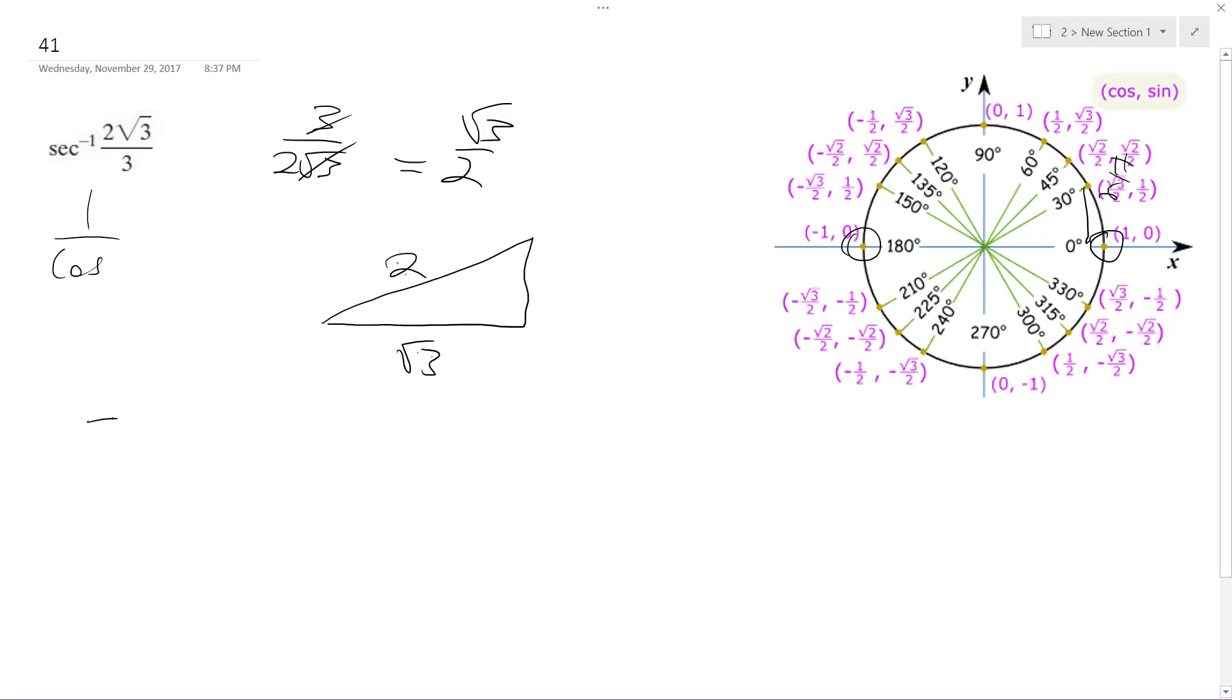So the solution to this problem is just pi over 6. And like I said, the whole reason I used the cosine is because it allowed me to see it better. It's a little bit harder if you use a secant.